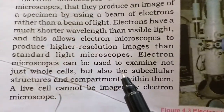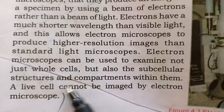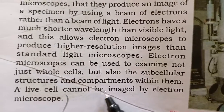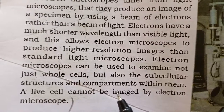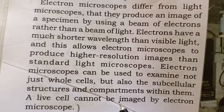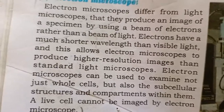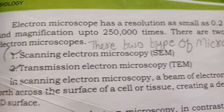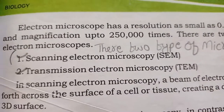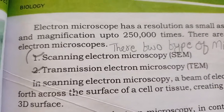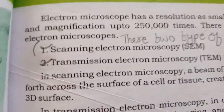But there is a drawback — live cells cannot be imaged. The cell is killed because we use different dyes and electron beams. There are two types of electron microscope, on page number 55: scanning electron microscope and transmission electron microscope. There are detailed questions on this which you can learn very well for the exam.